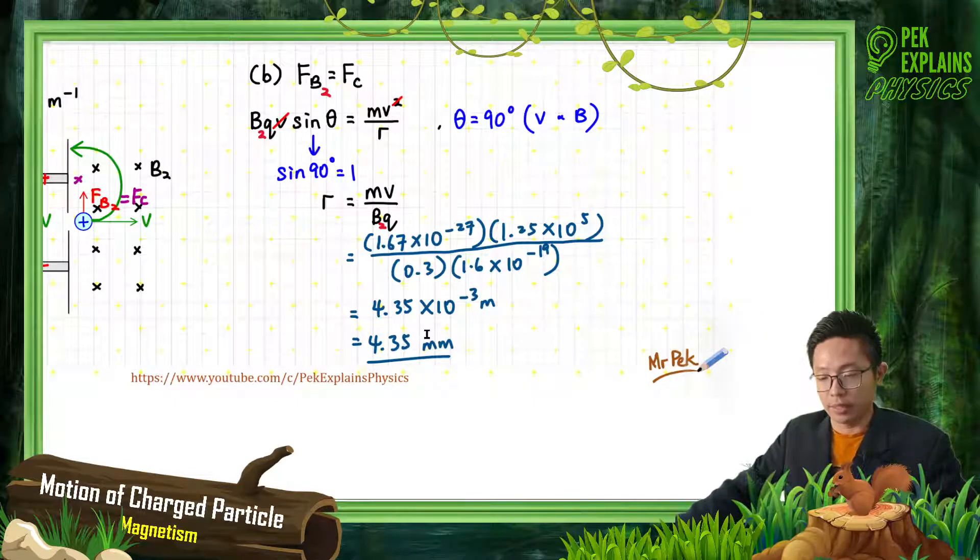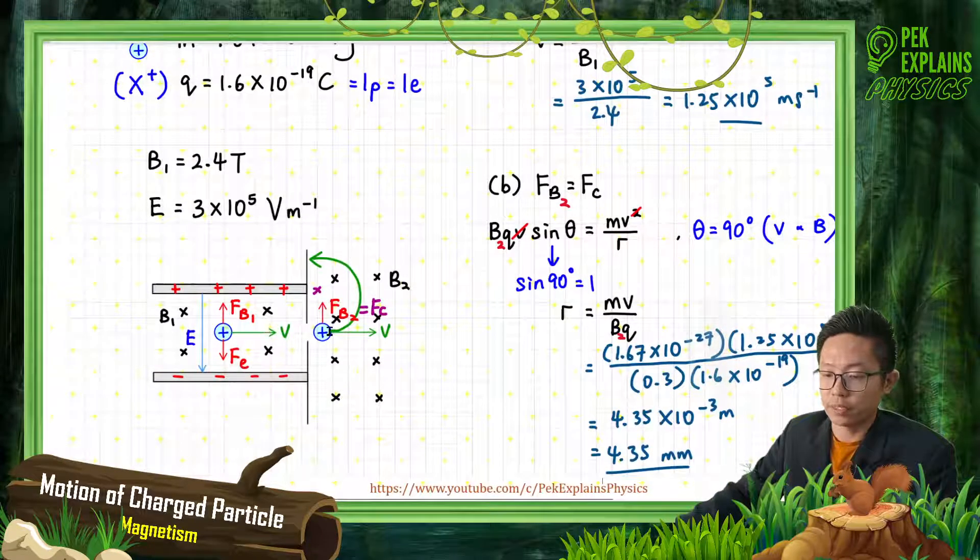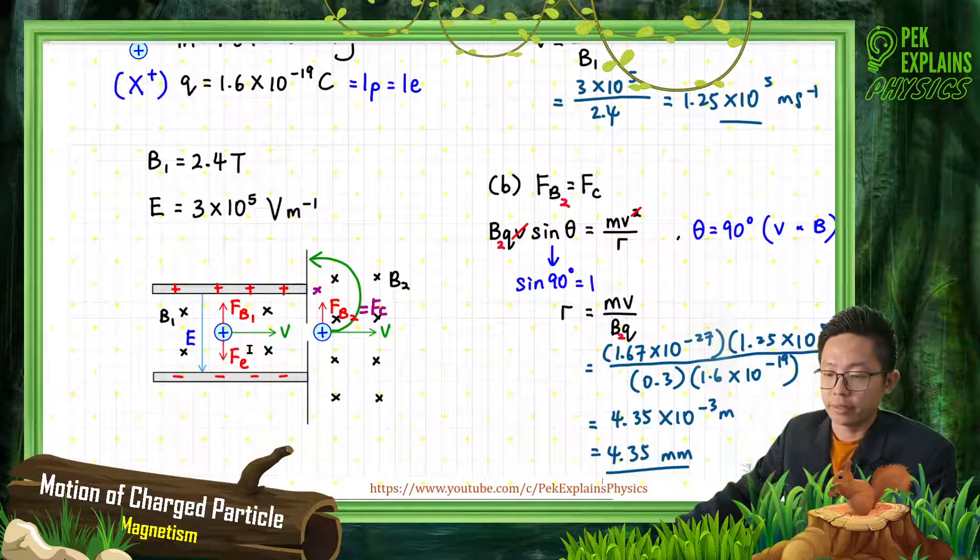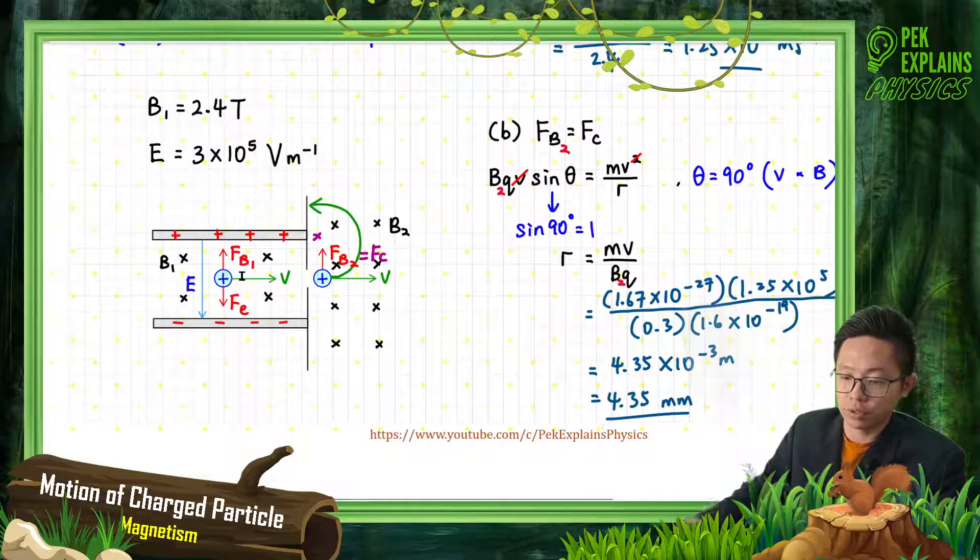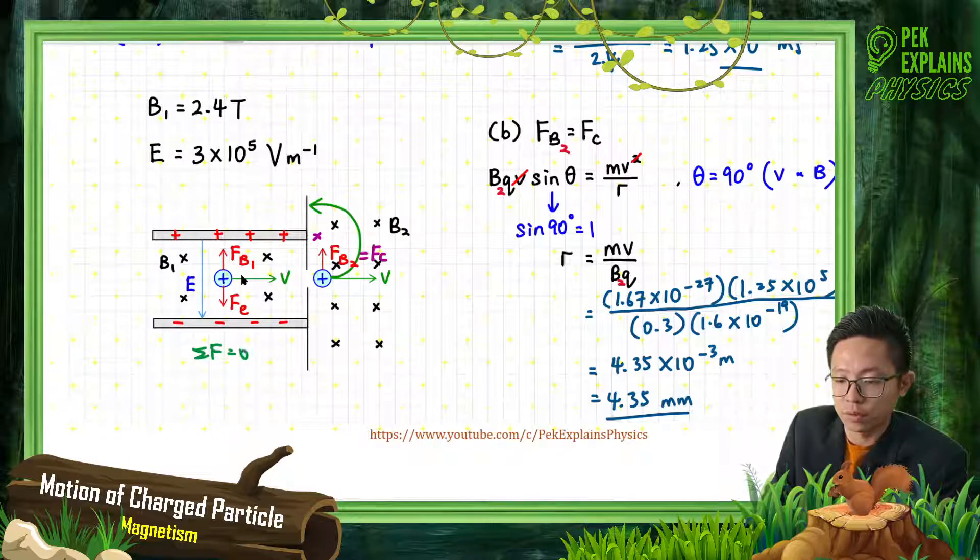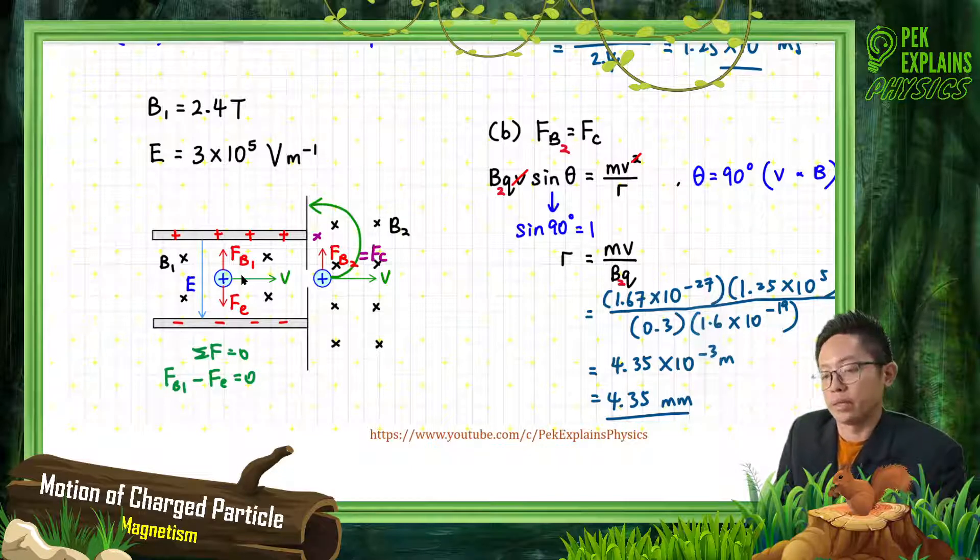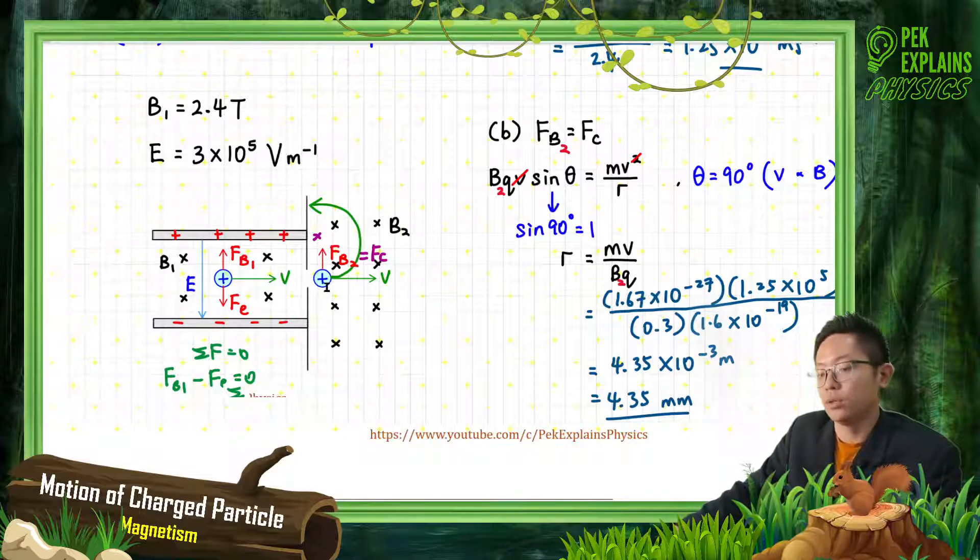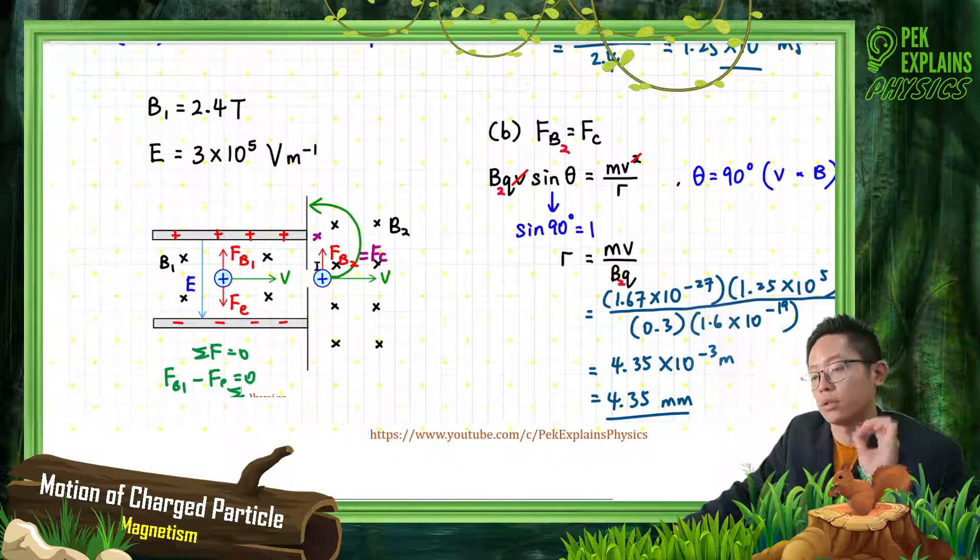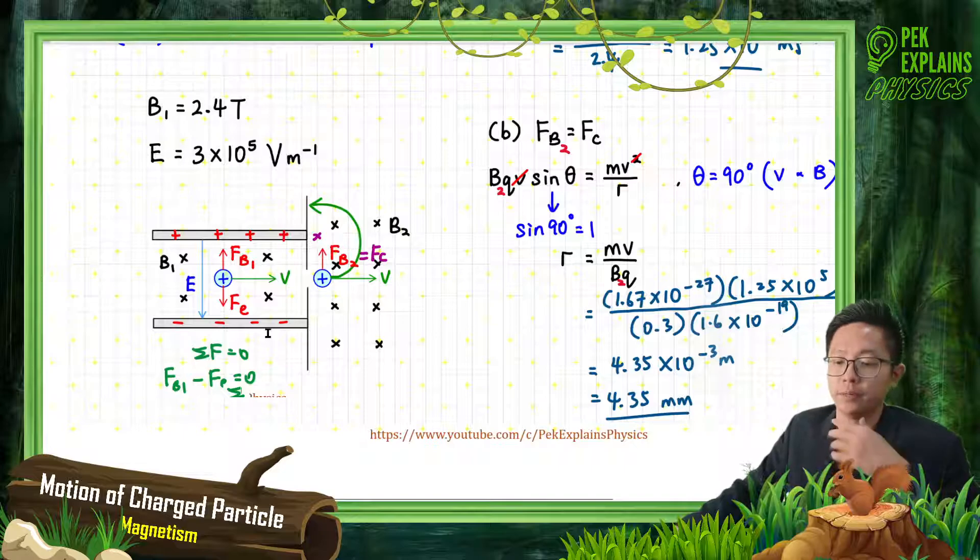So here is velocity selector. In fact here, the total force equals zero. The total force here equals zero because FB1 minus Fe. For this region, no electric force, so the magnetic force becomes the centripetal force for this charge to move in a circle.